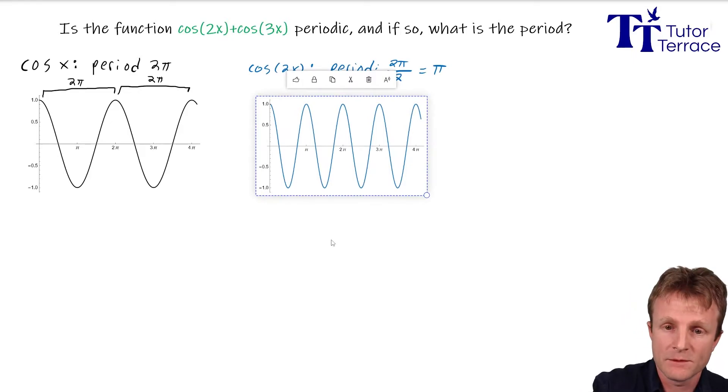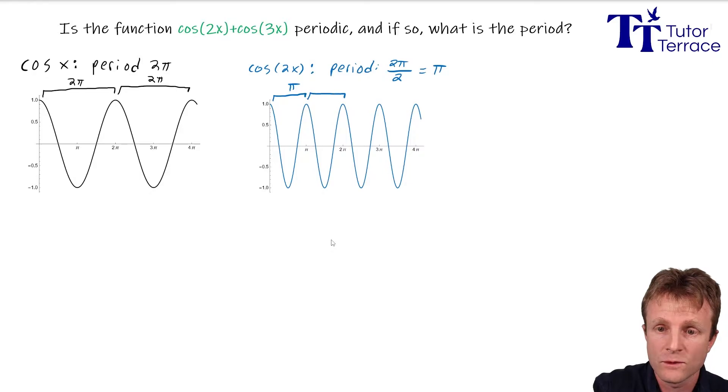It looks exactly the same, except squished. And so here is cosine of 2x. And again, we can label the period. This time it's only π, so we fit twice as many in on our screen. And there you have it. Cosine 2x has period π.